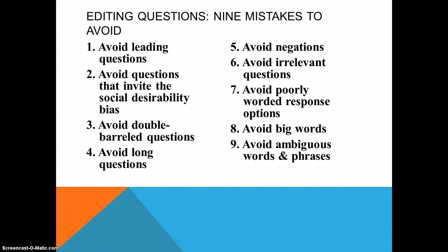Again, things to avoid: leading questions, questions that invite social desirability bias, or questions that people think they have to answer a certain way to be politically correct. We really want to know what people are thinking. We want to avoid double-barreled questions, long questions, or questions with double negatives. We certainly don't want to ask any irrelevant questions — another reason why another person or people should look at your survey before you administer it. We want to make sure that our questions are worded well, avoiding big jargon or technical words, and we want to avoid ambiguous words like 'often' or 'occasionally.'